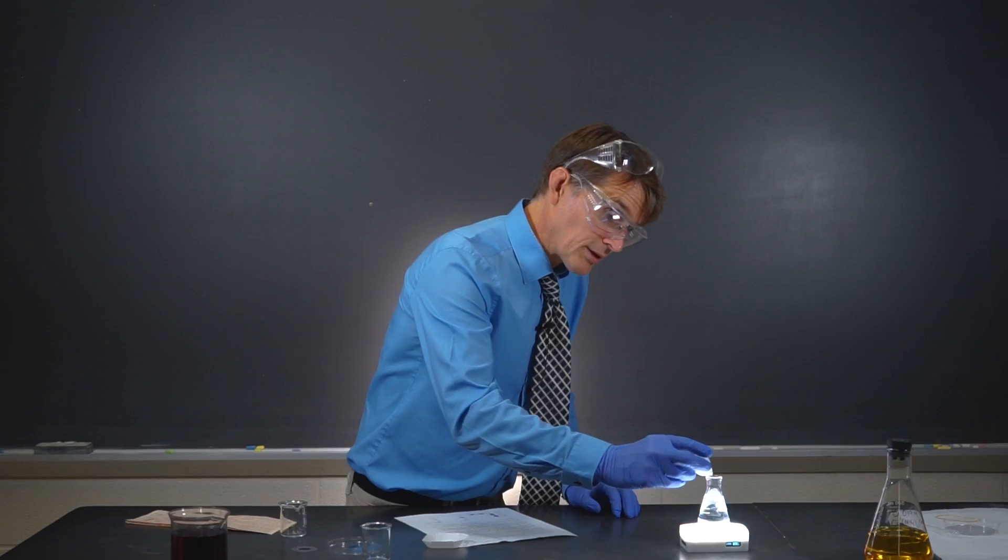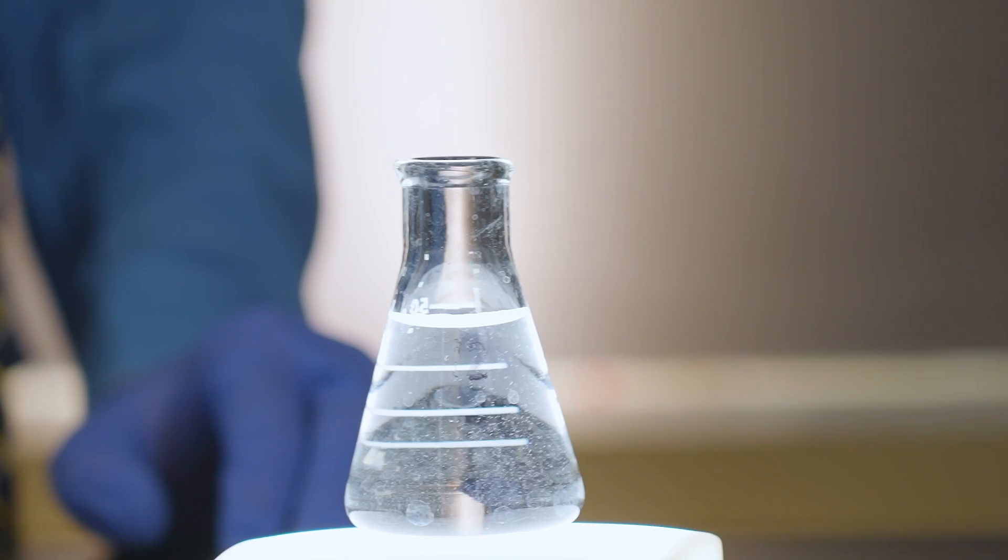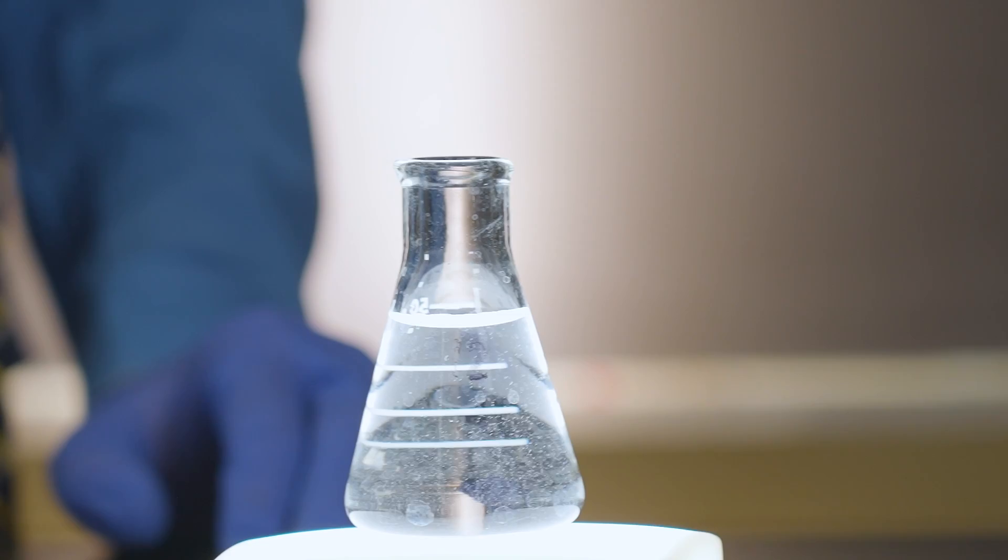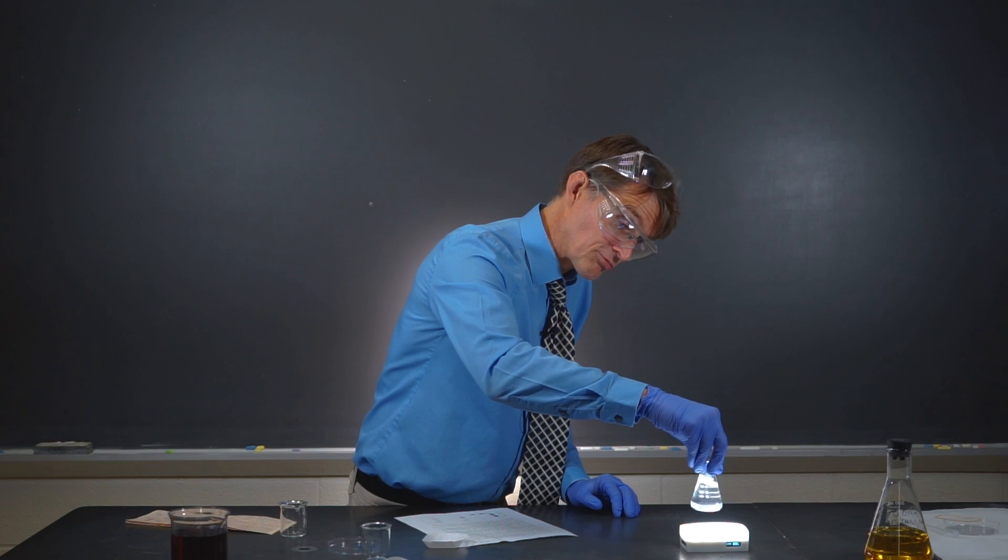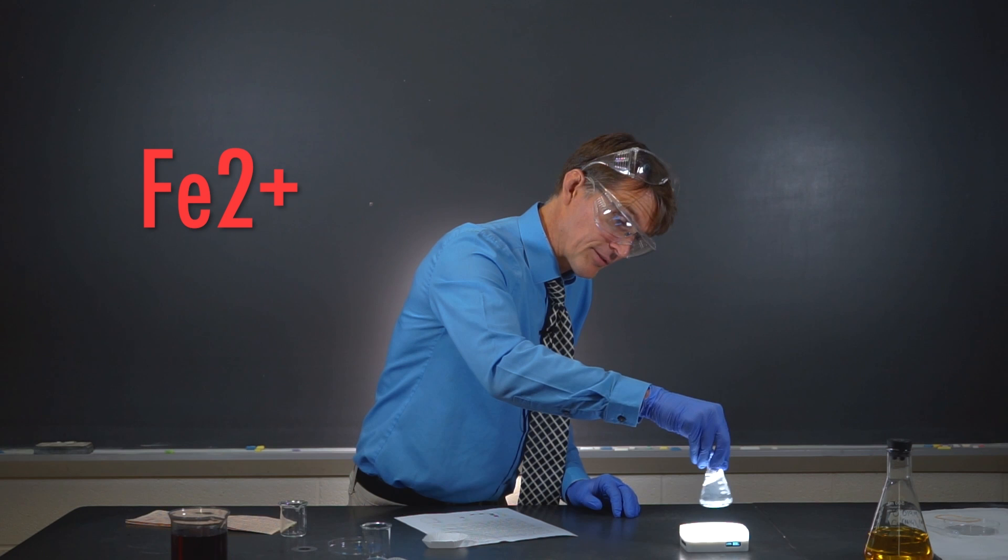We're going to add a little bit of iron ions to this flask here. We're going to try to make our iron indicator. Remember, the iron is what's going to give us the red and the blue color. The iron 2 gives us the red. And if there's iron 3, we're going to see blue.